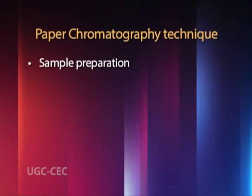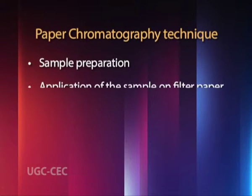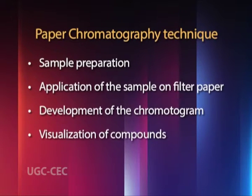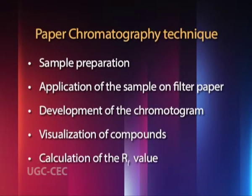Performing a paper chromatography experiment is basically a five-step process: sample preparation, application of the sample on the filter paper, development of the chromatogram, visualization of compounds, and calculation of the RF value.